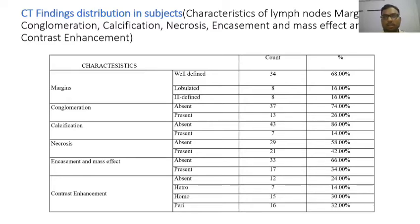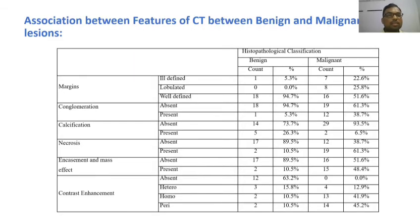Regarding CT finding distribution: well-defined margins are seen in 68% of patients, conglomeration absent in 74%, calcification absent in 86%, necrosis absent in 58%, and encasement/mass effect absent in 66%. Homogeneous contrast enhancement is seen in 30% and heterogeneous enhancement in 14% of patients. Regarding association between CT features and benign vs. malignant lesions: 23% of malignant lesions have ill-defined margins, conglomeration is absent in 62% of malignant and 94% of benign lesions, necrosis absent in 89% of benign and 38% of malignant lesions, encasement/mass effect present in 49% of malignant lesions, and homogeneous enhancement present in 42% of malignant lesions.